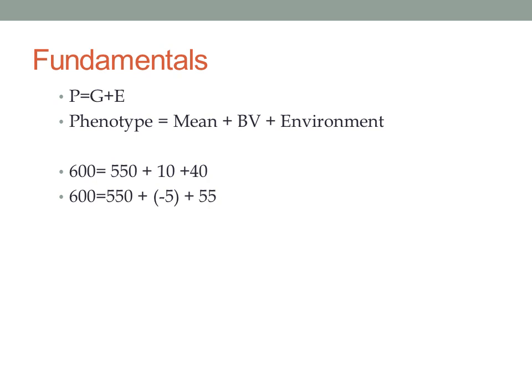Let's compare these two calves. Both weighed 600 pounds at weaning — those are unadjusted weaning weights — and both come from the same population, so they have the same population mean of 550. The calf on the top has a breeding value of plus 10 and an environmental effect of plus 40, whereas the calf on the bottom has a breeding value of negative 5 and an environmental effect of plus 55. They got to the exact same weaning weight, but through substantially different ways — the top calf through superior genetics, the bottom through an environmental advantage.